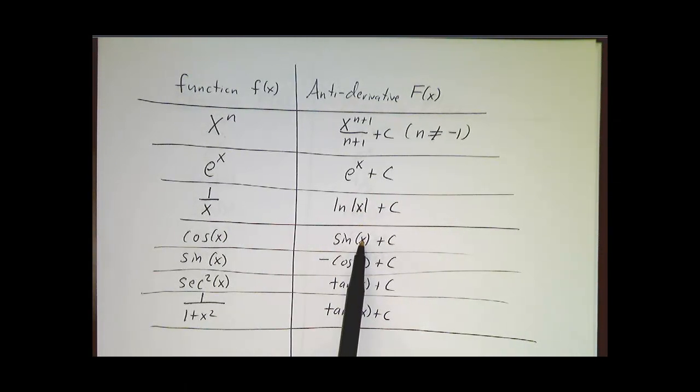Antiderivative of cosine, sine, because the derivative of sine is cosine. Antiderivative of sine, negative cosine. Secant squared, tangent. 1 over 1 plus x squared, arctangent.